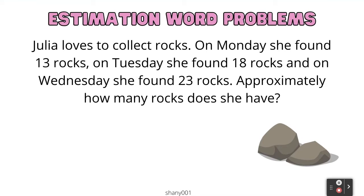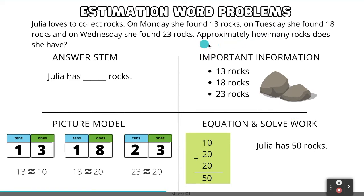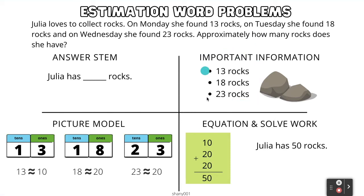Let's try our next problem. Julia loves to collect rocks. On Monday she found 13 rocks, on Tuesday she found 18 rocks, and on Wednesday she found 23 rocks. Approximately how many rocks does she have? Our answer stem is: Julia has blank rocks. Our important information is 13 rocks, 18 rocks, and 23 rocks. The word 'approximately' means we are going to round all of these numbers first.